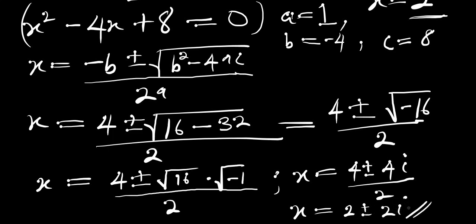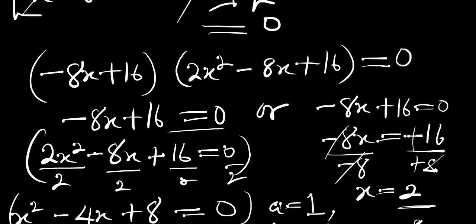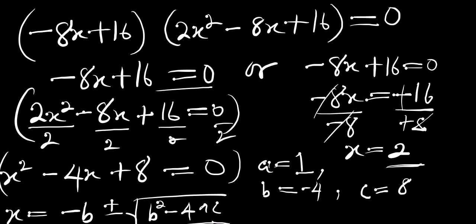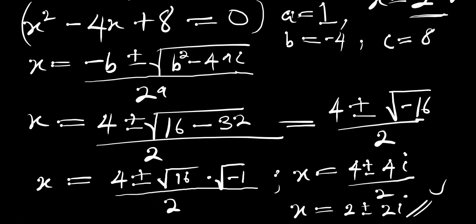So 2 plus or minus 2i are the complex solutions of this equation. The real solution we found earlier was x equals 2. In summary, x equals 2 and x equals 2 plus or minus 2i. That's it for the video — thank you and goodbye.